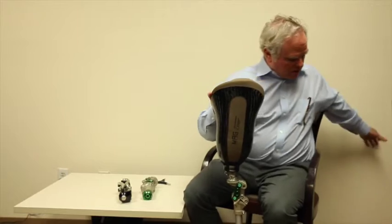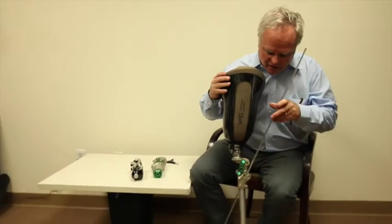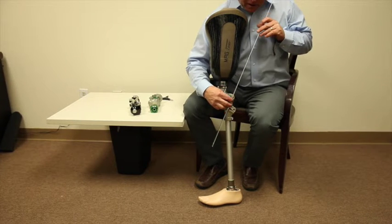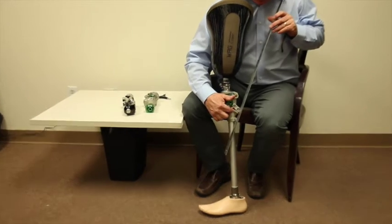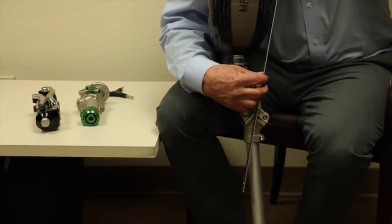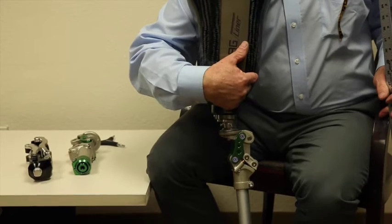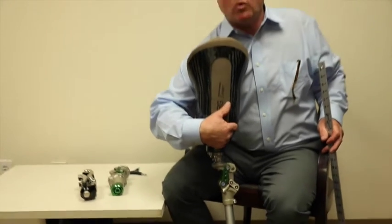In general, if you imagine a line going from this pivot point through that pivot point going up, and you measure another line that goes from this pivot point and that one coming up, they intersect back here. So your knee center in essence is way back here.